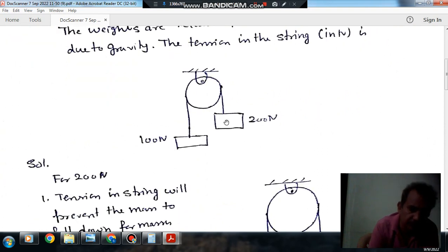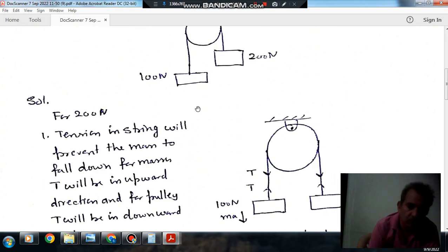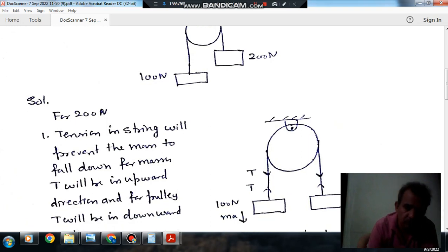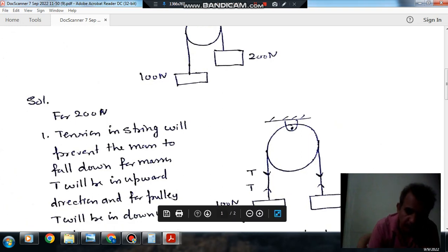This is the system given. This is 200N weight, this is 100N weight, and this is your pulley. Here 200N weight is more than 100N, so it will start moving in downward direction.